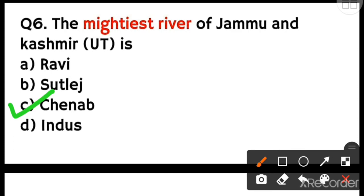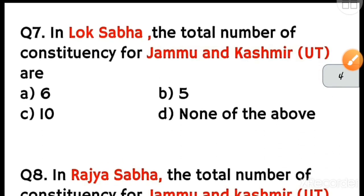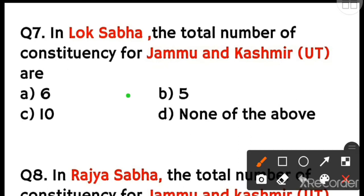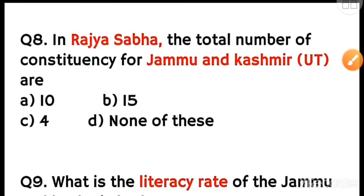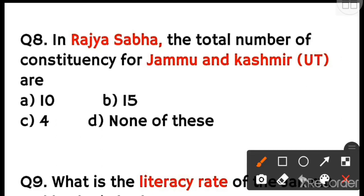The next question asks about the mightiest river of Jammu and Kashmir UT. Moving on: in Lok Sabha, what is the total number of seats for Jammu and Kashmir UT? The options are 6, 5, 10, and 9. The correct answer is 5 seats in Lok Sabha — option B. Next, in Rajya Sabha, the total number of seats for Jammu and Kashmir UT is 4. So 4 seats in Rajya Sabha is the correct answer.